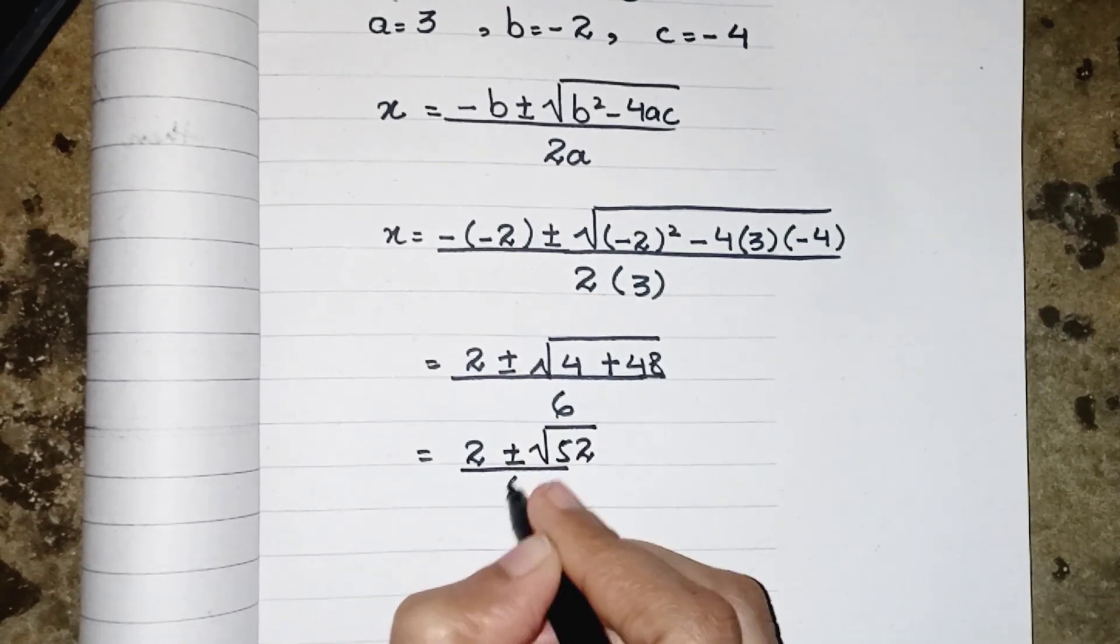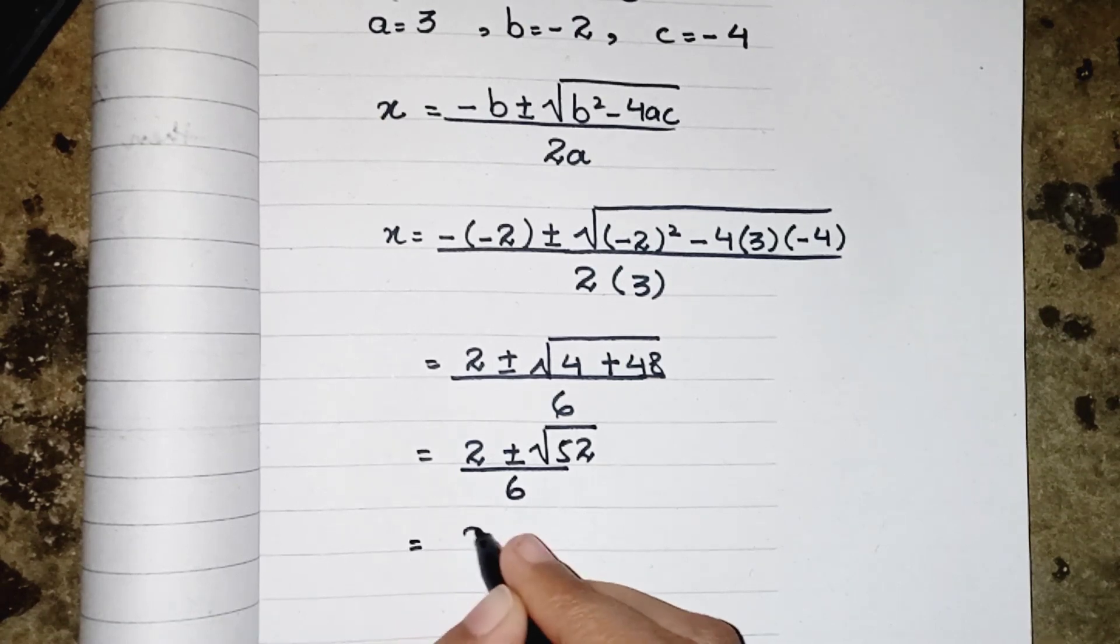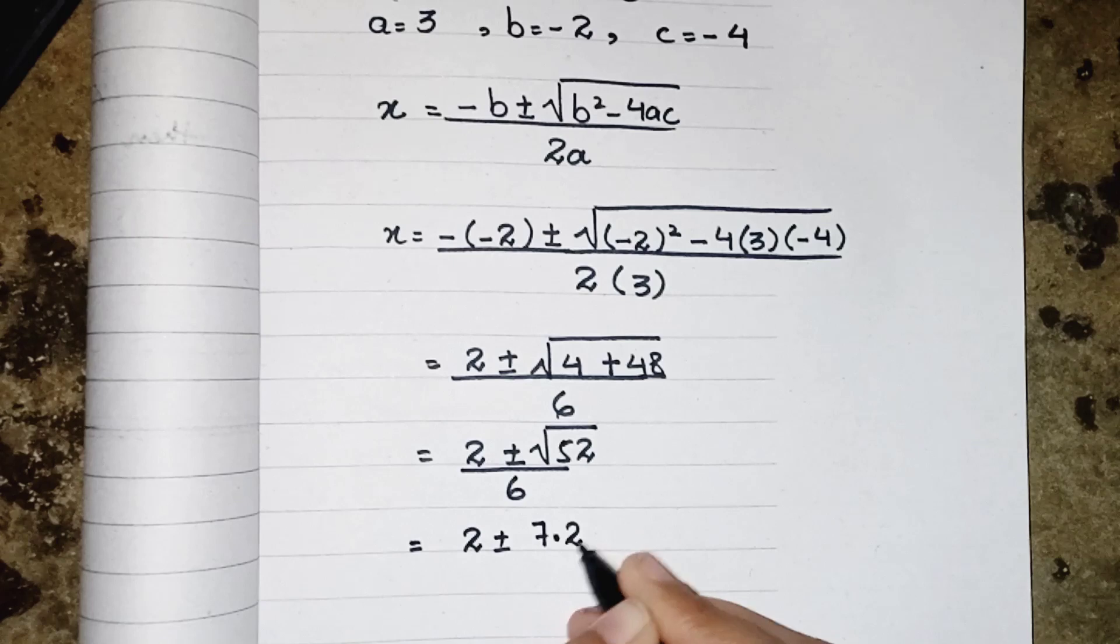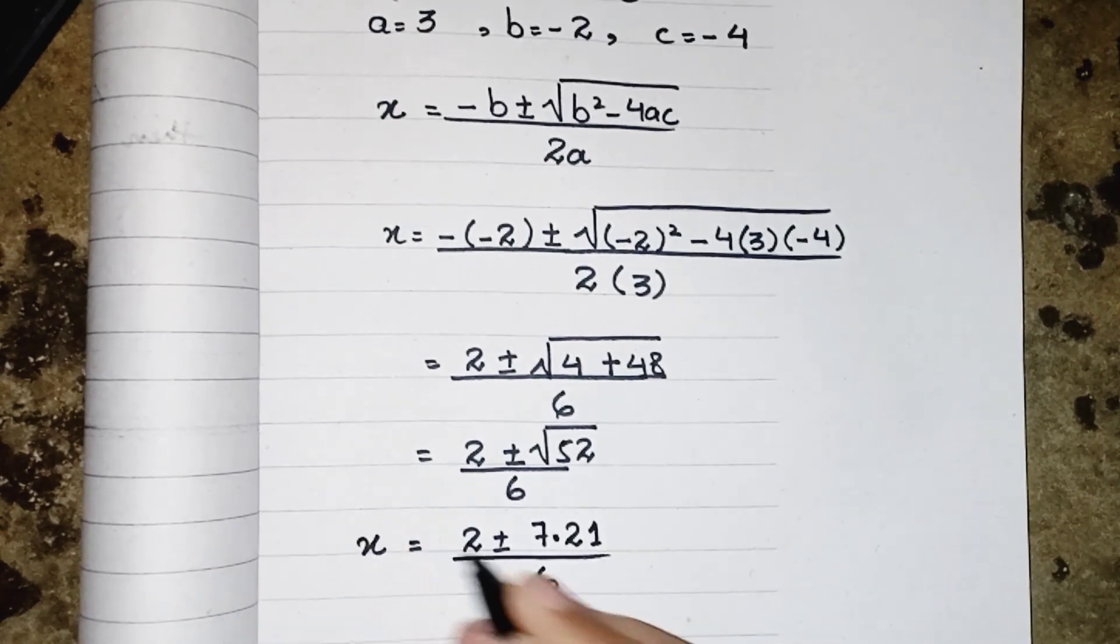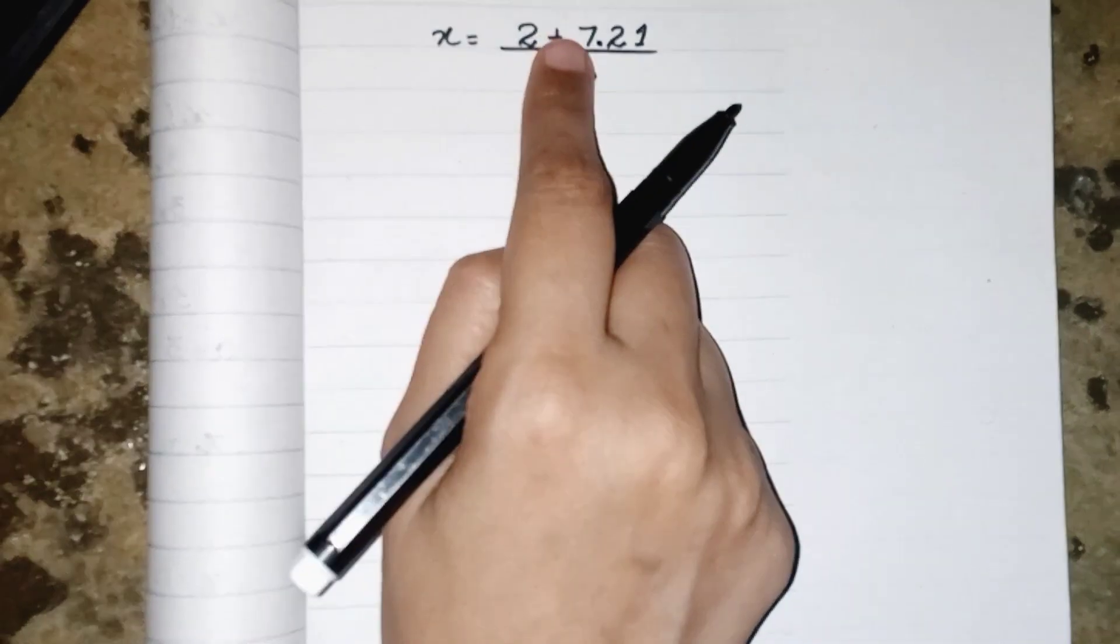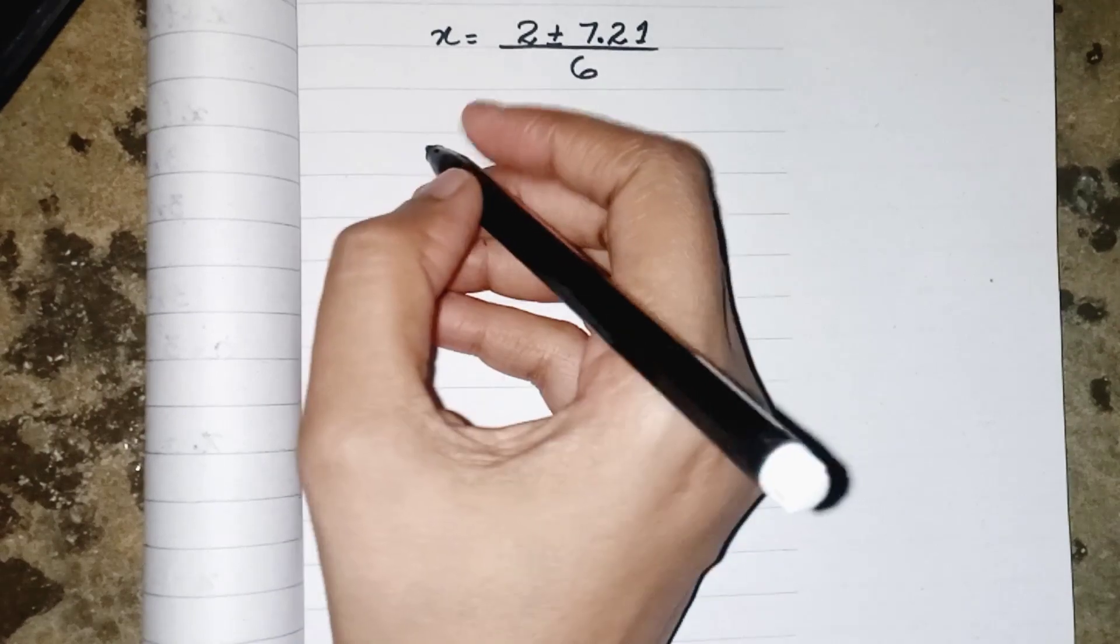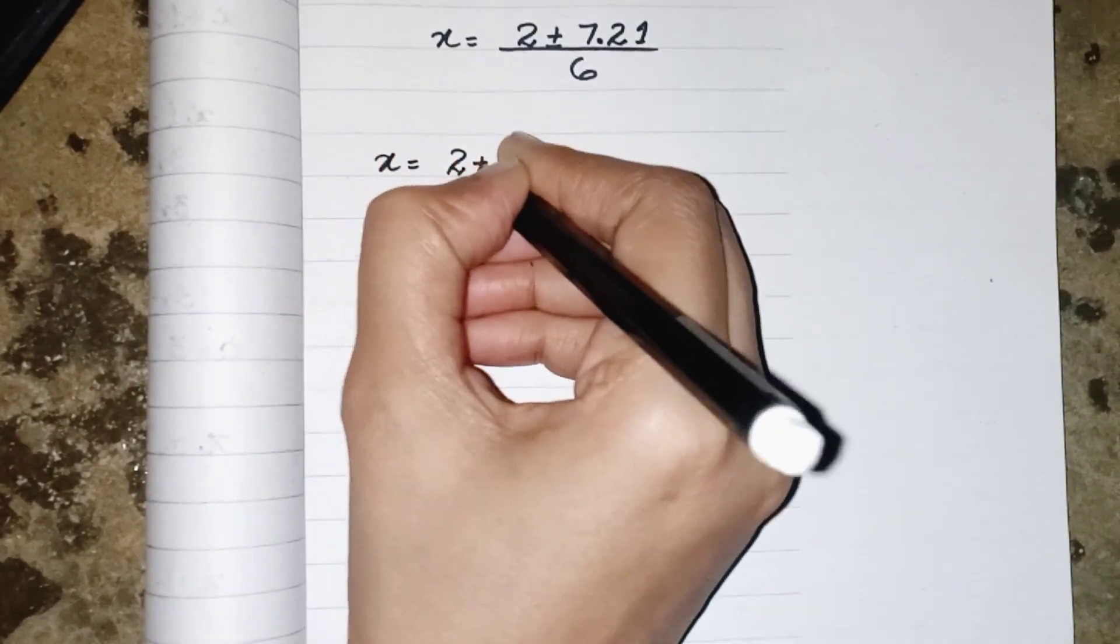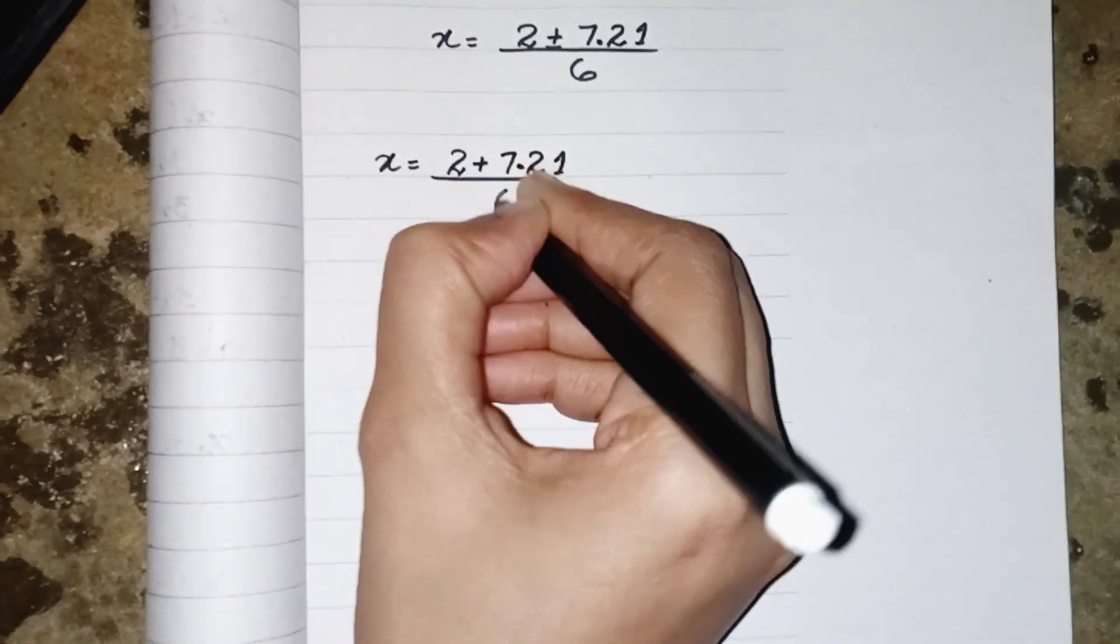upon 6 and the root value of 52 equals 7.21 divided by 6. Now this 7.21 one time added with 2 and one time subtracted with 2 so we can just separate them: (2 + 7.21)/6